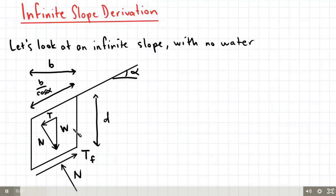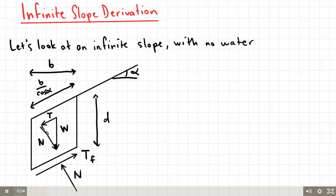This is our soil element. It has a width of b and a depth of d, and along the slope surface this length is represented by b divided by cosine alpha. The soil element also has a weight force W, which can be broken down into a tangential force component T and a normal force component N. This normal force component is balanced by the reaction normal force.